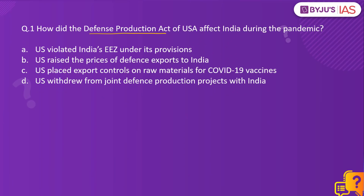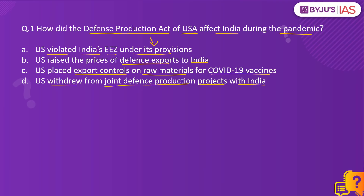How did the Defense Production Act of the United States affect India during the pandemic? Option A: U.S. violated India's exclusive economic zone under its provisions. Option B: U.S. raised the prices of defense exports to India. Option C: U.S. placed export controls on raw materials for COVID-19 vaccines. Option D: The U.S. withdrew from joint defense production projects with India. The correct answer is option C.